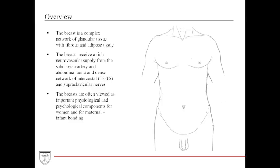The breasts are very unique structures located in the anterior chest wall. They are composed of glandular tissue, which helps with the production of milk, as well as fibrous fatty adipose tissue which helps with support. The breasts receive a very dense neurovascular supply from the subclavian artery via the IMA, the internal mammary artery, as well as the abdominal aorta via the intercostal arteries. They also receive dense innervation from the intercostal nerves as well as the supraclavicular nerves.